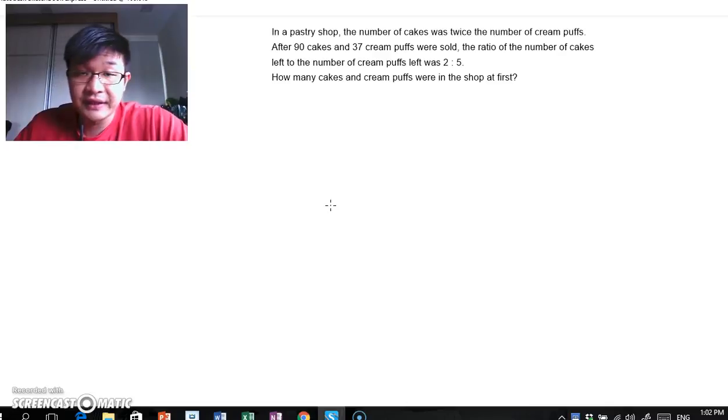So today's question goes like this. In a pastry shop, the number of cakes was twice the number of cream puffs. After 90 cakes and 37 cream puffs were sold, the ratio of the number of cakes left to the number of cream puffs left was 2 to 5. How many cakes and cream puffs were there in the shop at first?